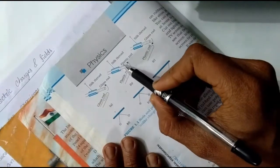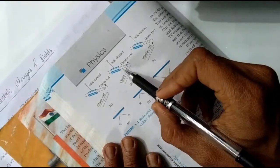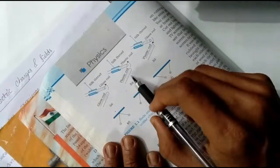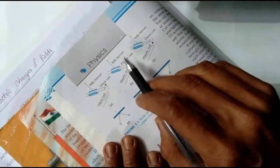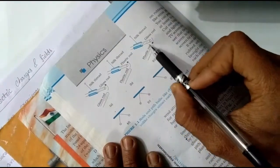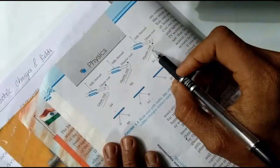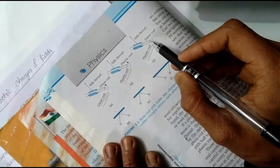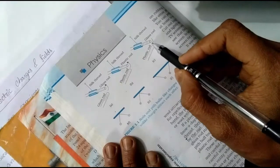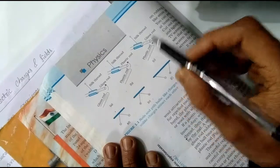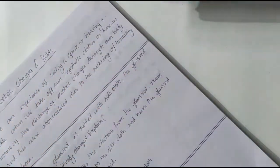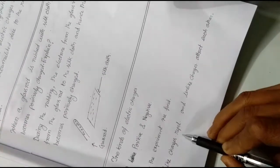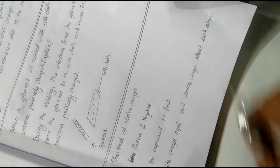When we bring the two positively charged rods close together, there is repulsion between them. Now, if we take a plastic rod and rub it with fur, it becomes negatively charged. When we bring this negatively charged plastic rod near the positively charged glass rod, there is attraction. This demonstrates that like charges repel and opposite charges attract.